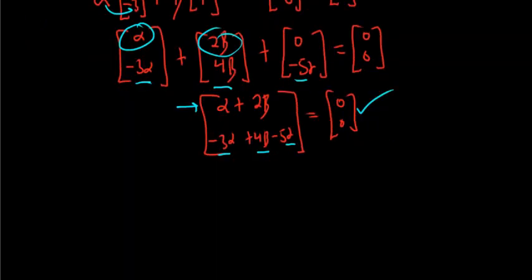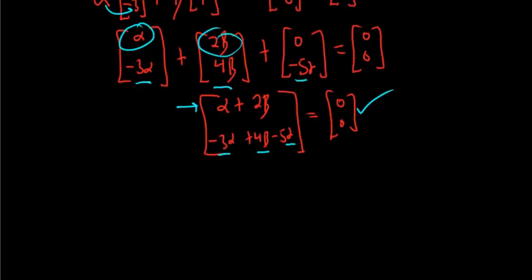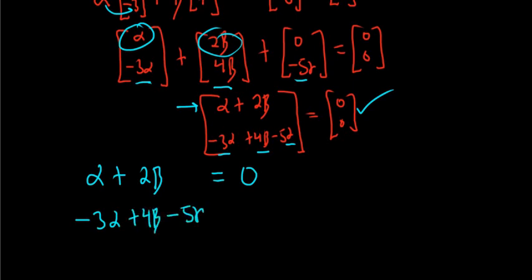So it's really easy to mess up in these problems. You do one little mistake, and the whole thing is wrong. You really have to focus. All right, two vectors are equal and their components are the same, so this means that alpha plus 2 beta equals 0. Notice how far I put the equal sign. I'm going to leave some room for the gamma below. Then minus 3 alpha plus 4 beta minus 5 gamma equals 0.